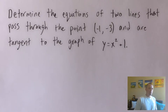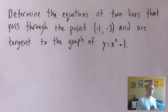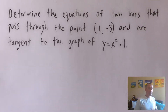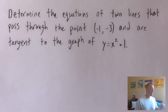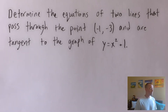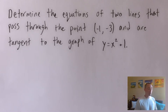So here's the problem we're going to be going over today. I know that it doesn't look like a weird problem, but bear with me for just a second and I'll explain exactly why this is such a weird tangent line equation problem. What we're going to do is determine the equations of two lines that pass through the point negative one, negative three, and are tangent to the graph of y equals x squared plus one.